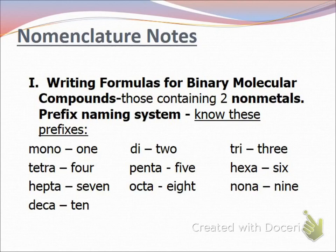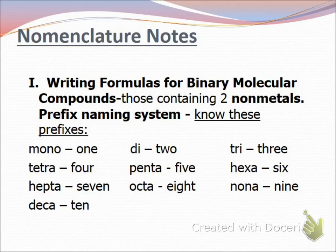The first part is the easiest part: naming molecular compounds. When we're talking about molecular compounds we are talking about covalently bonded compounds — it's two non-metals. They're called molecules, so we refer to them as molecular compounds. They are the easiest to name because they use a prefix system. The reason they use a prefix system is because they are sharing their electrons and can go together in a variety of ways, so we actually have to tell you how many atoms are bonded together.